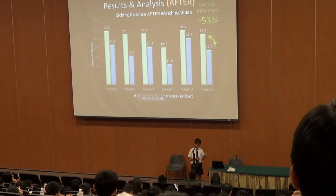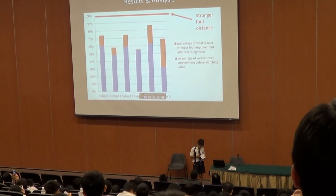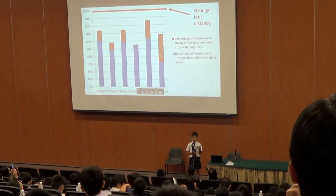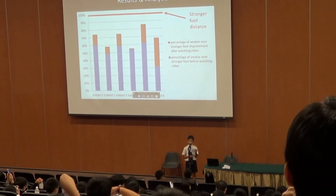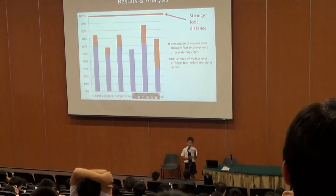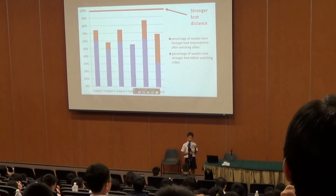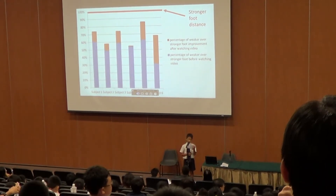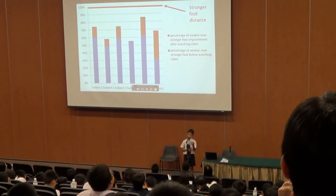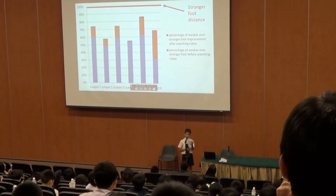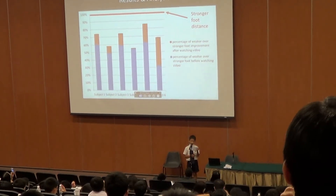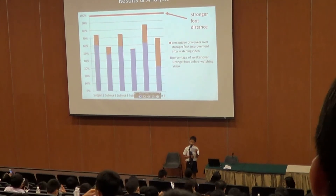This chart shows the kicking distance of the weaker foot before and after watching the video. The red line shows the kicking distance of the stronger foot, represented as 100%. The weaker leg kicking distance before watching the video is represented by the blue bars, which are much lower compared to after watching the video, represented by the blue and red bars combined. The red bars represent the improvement made by the subjects. The visual mental imagery technique is simple yet effective, as five out of six subjects benefited greatly.